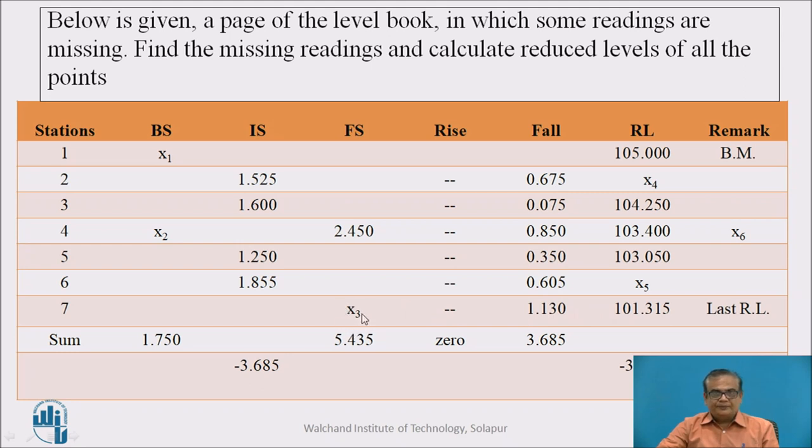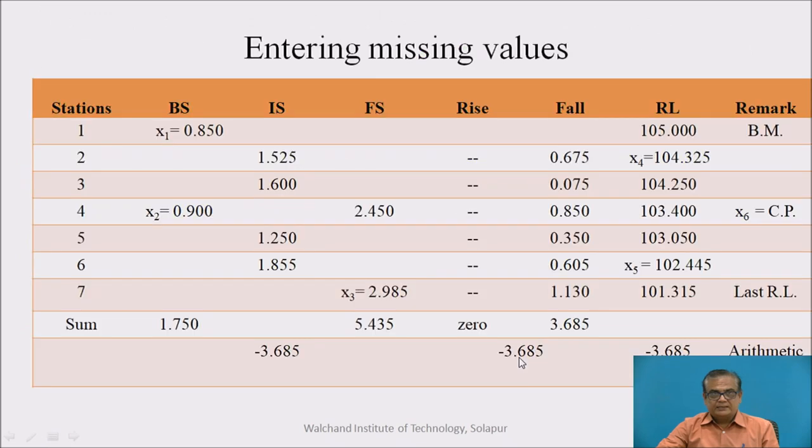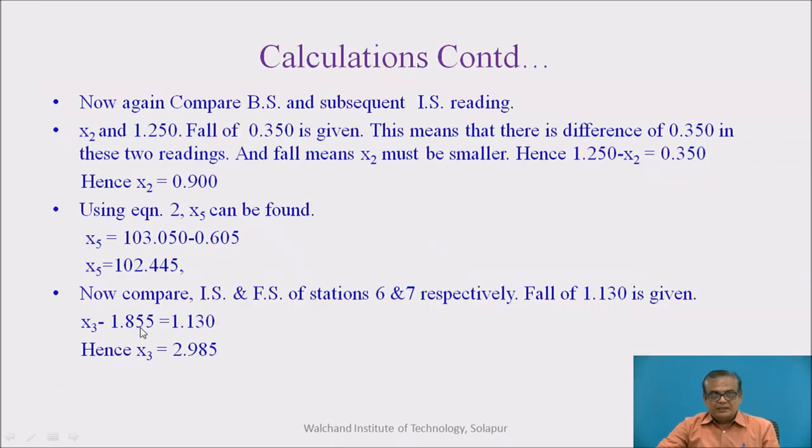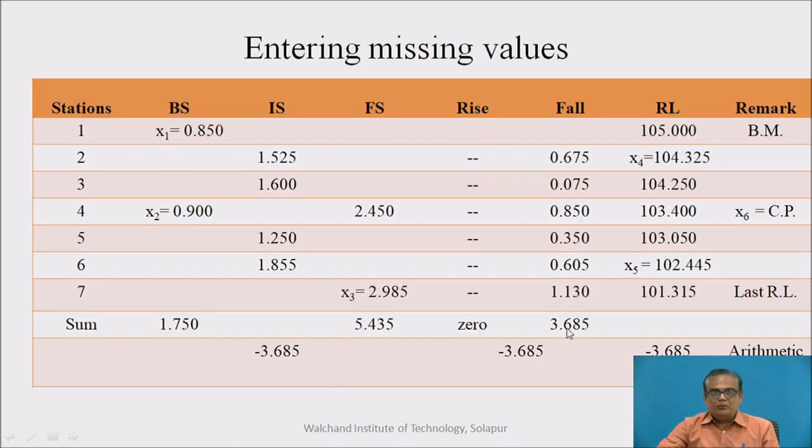Now, one more missing reading is there, X3. That is foresight reading. And for finding this, what we should do? We should compare now this foresight reading with previous reading, intermediate reading is 1.855. So, when we compare these two, difference between these two amounts to be 1.130. It is given. Fall is 1.130. So, the difference is 1.130. And naturally, X3 must be the value which will be more because there is fall. And this intermediate sight reading will be lesser. So, what will be the equation? X3 minus 1.855 must be equal to 1.130. So, let us see what we get X3 now. Yes, X3 is equal to 2.985. So, enter the value of X3 here, 2.985. And we have got all the missing entries.